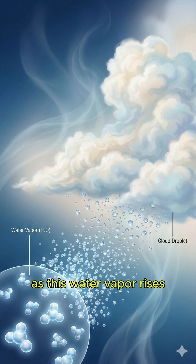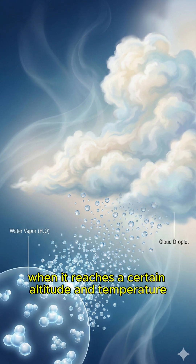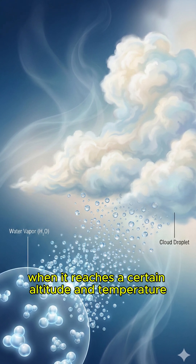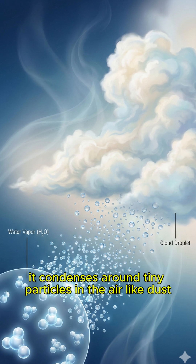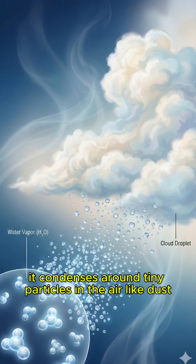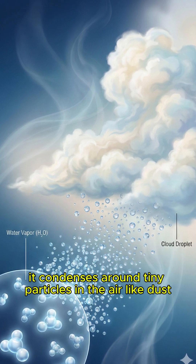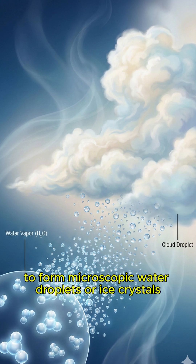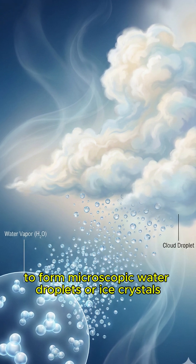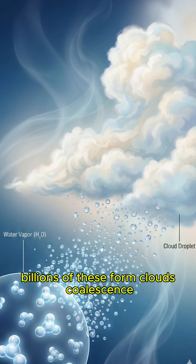Condensation. As this water vapor rises, it cools. When it reaches a certain altitude and temperature, it condenses around tiny particles in the air — like dust, pollen, or salt — to form microscopic water droplets or ice crystals.